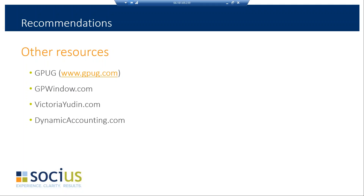There are other resources beyond the ones mentioned. If you're a member of the GP user group, you can go to www.gpuc.com. There are also other websites available, including gpwindow.com, victoriayuden.com, and dynamicaccountant.com — three sites that not only help you access certain things but can go beyond the year-end checklist to provide question and answer and knowledge base content on how to use Dynamics GP overall.